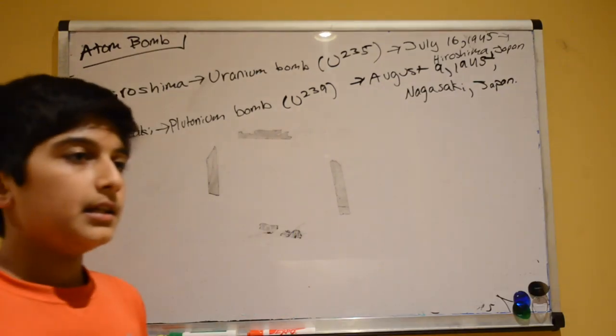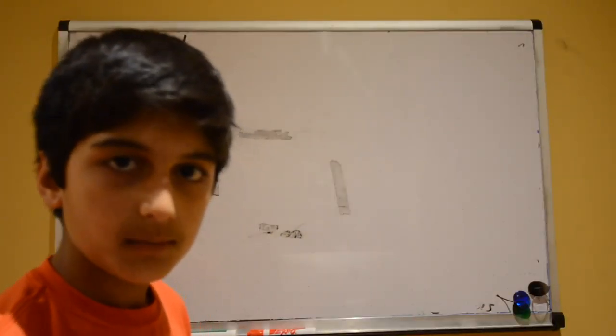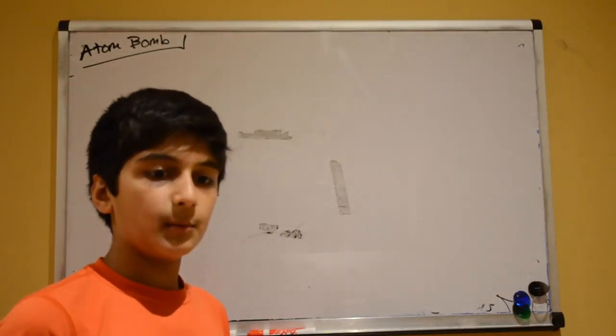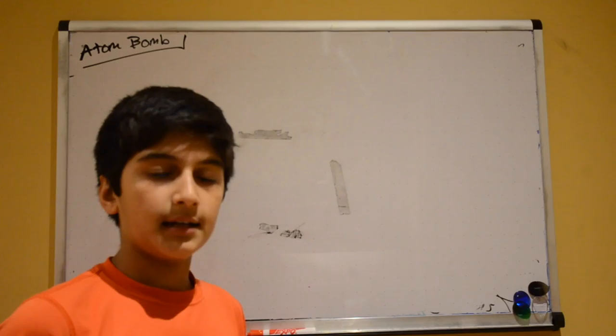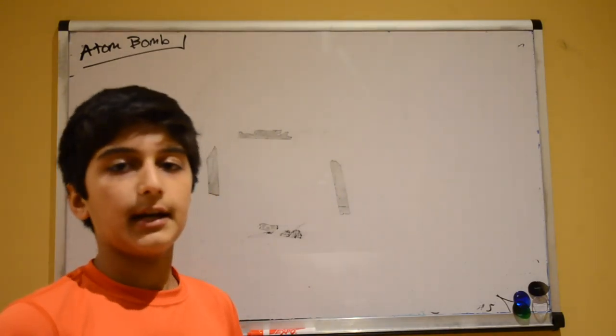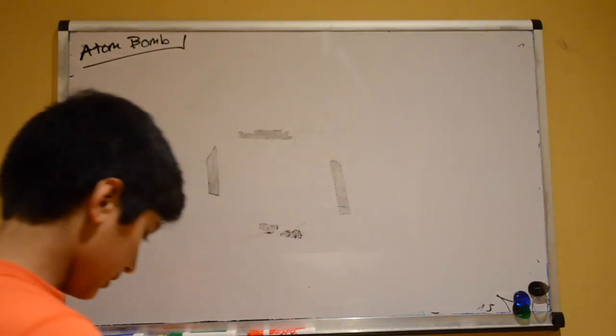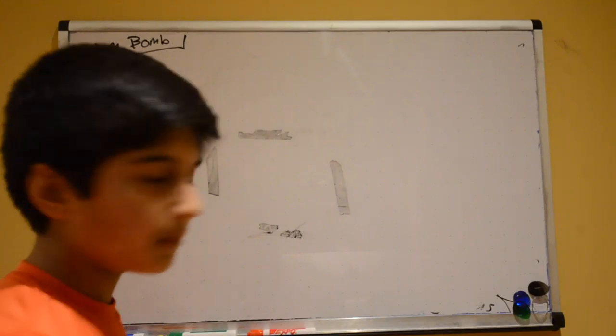So basically how an atom bomb works, right? It's the same for both bombs. The plutonium bomb was tested at Trinity test site on the 16th of July 1945 before the uranium bomb was dropped, because plutonium is just easier to obtain. So let's talk about how an atom bomb works.